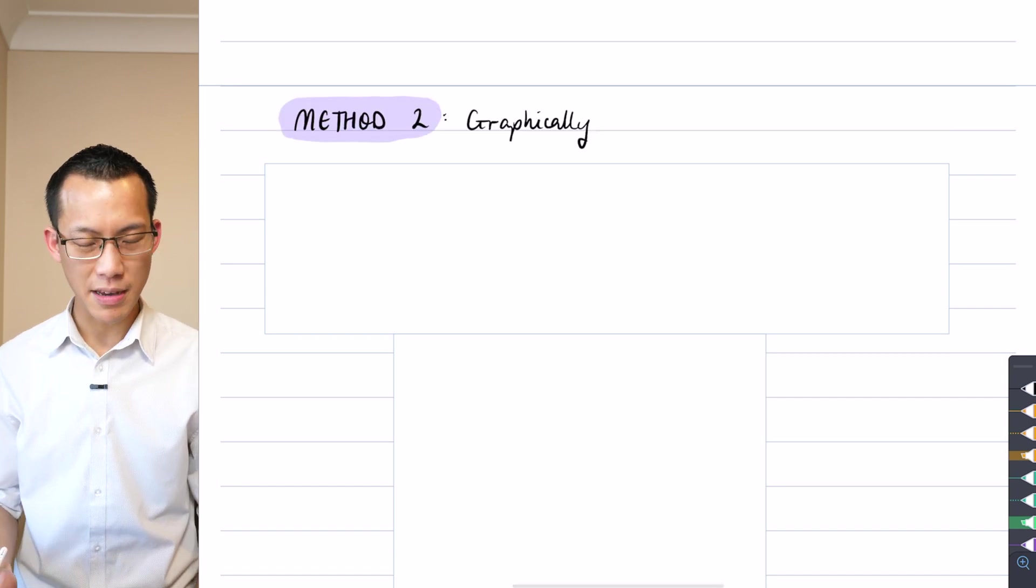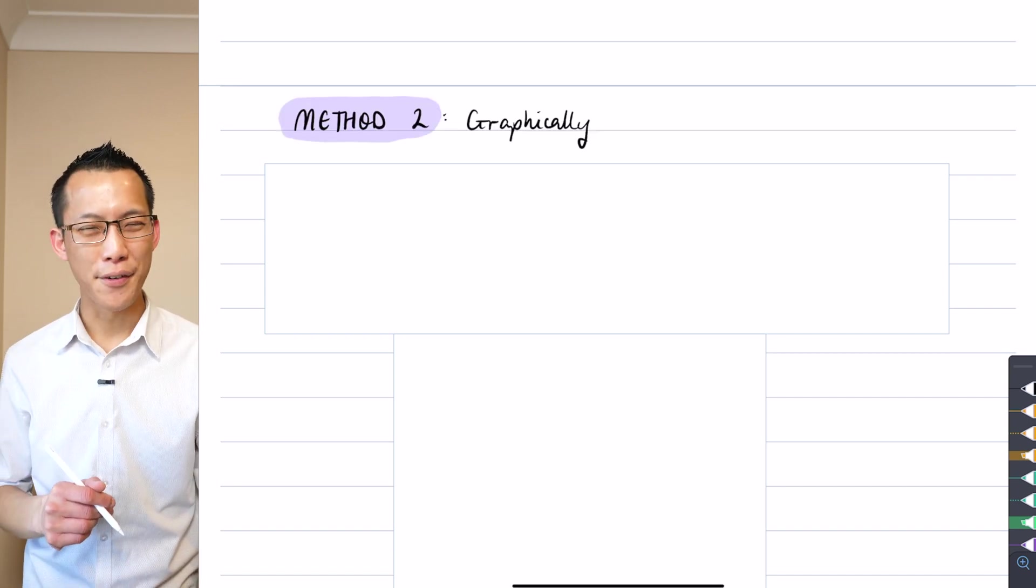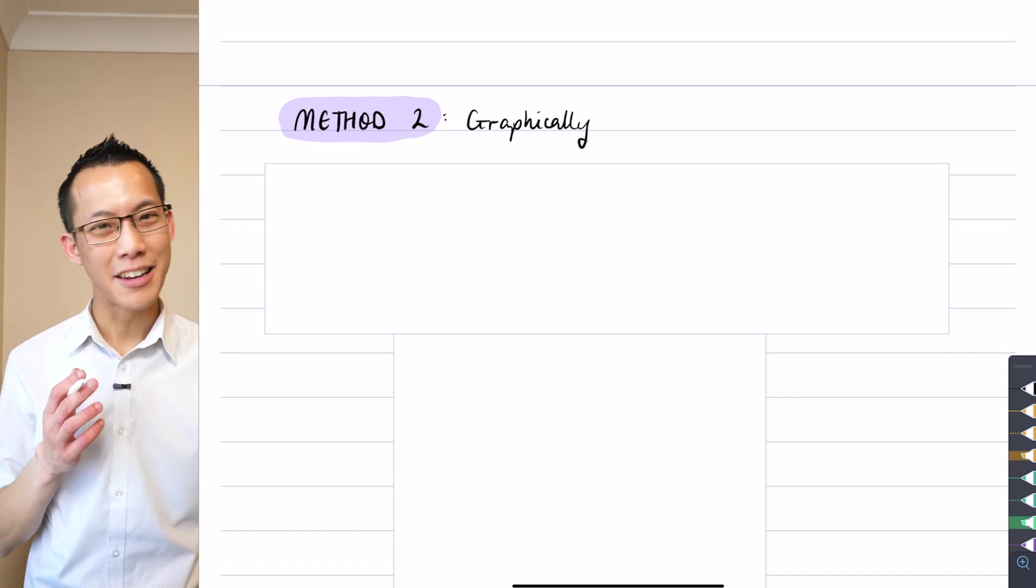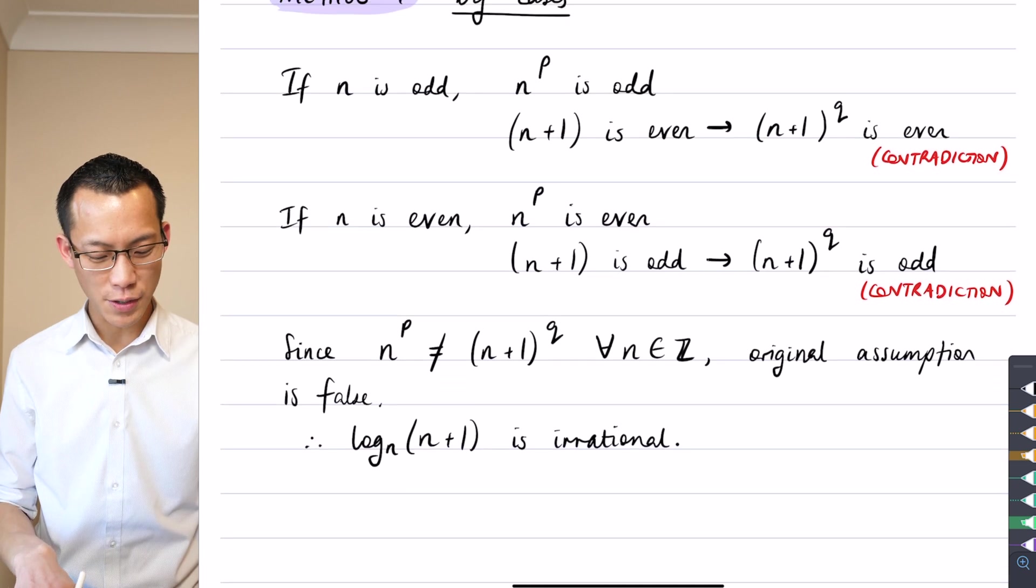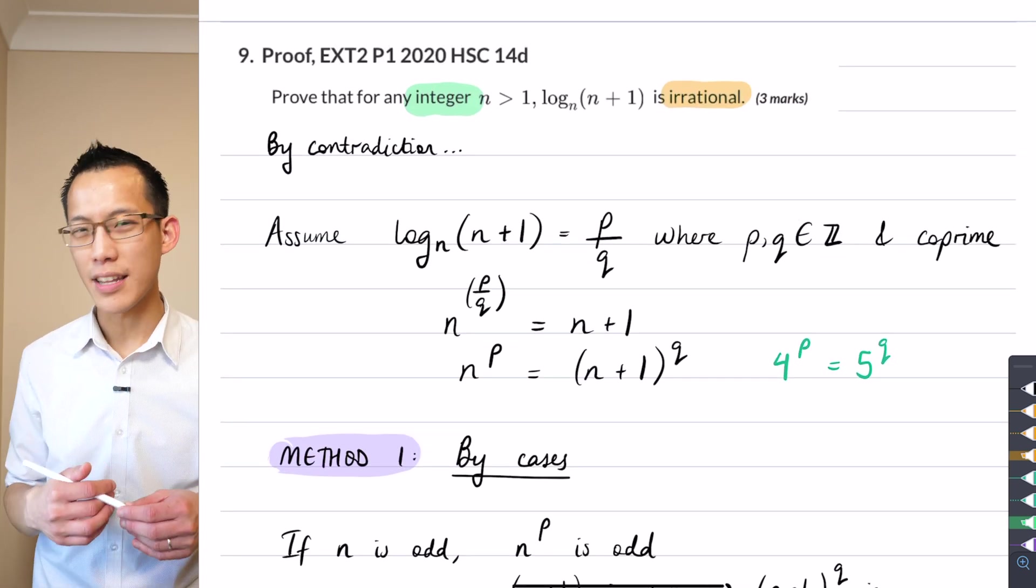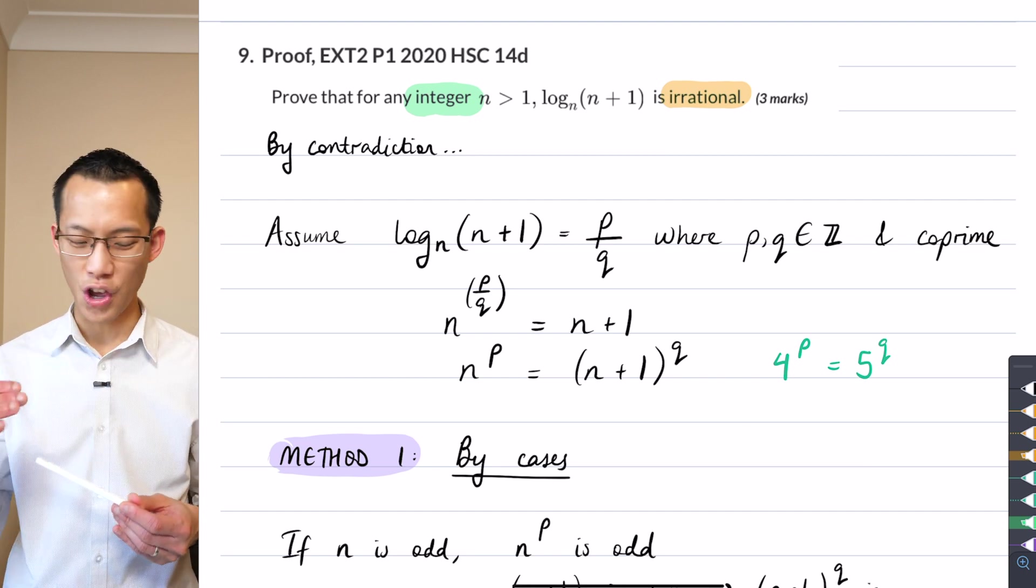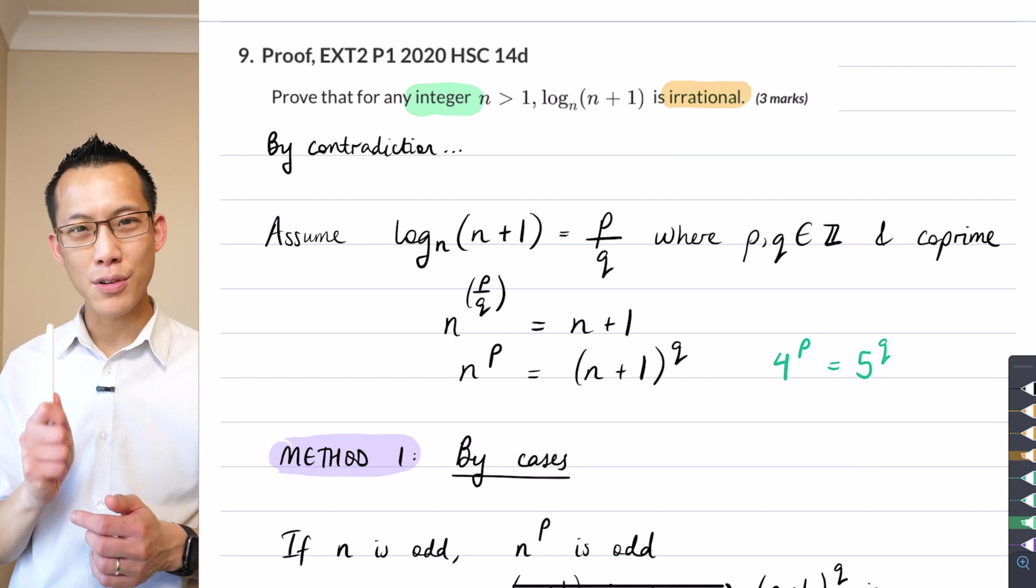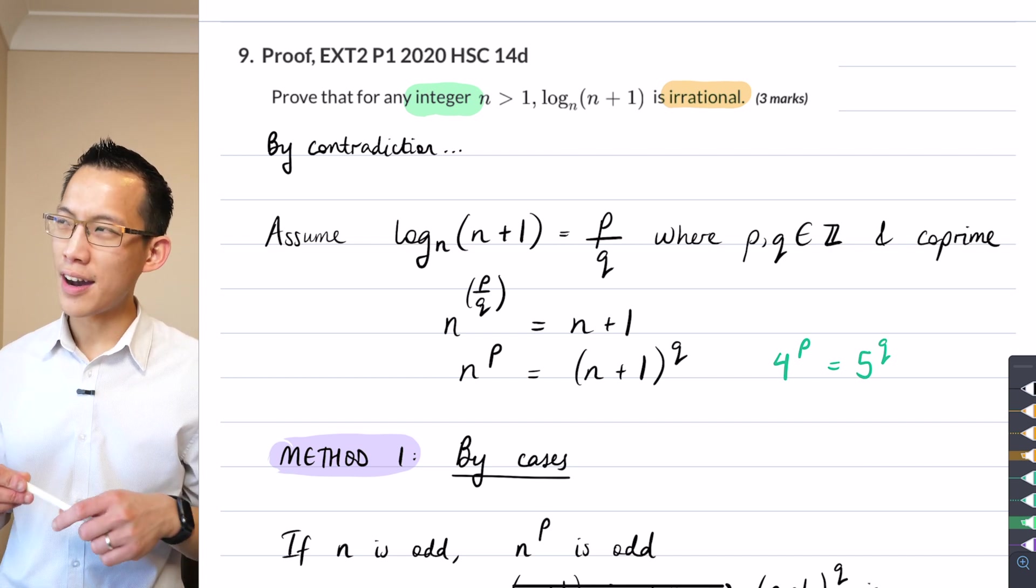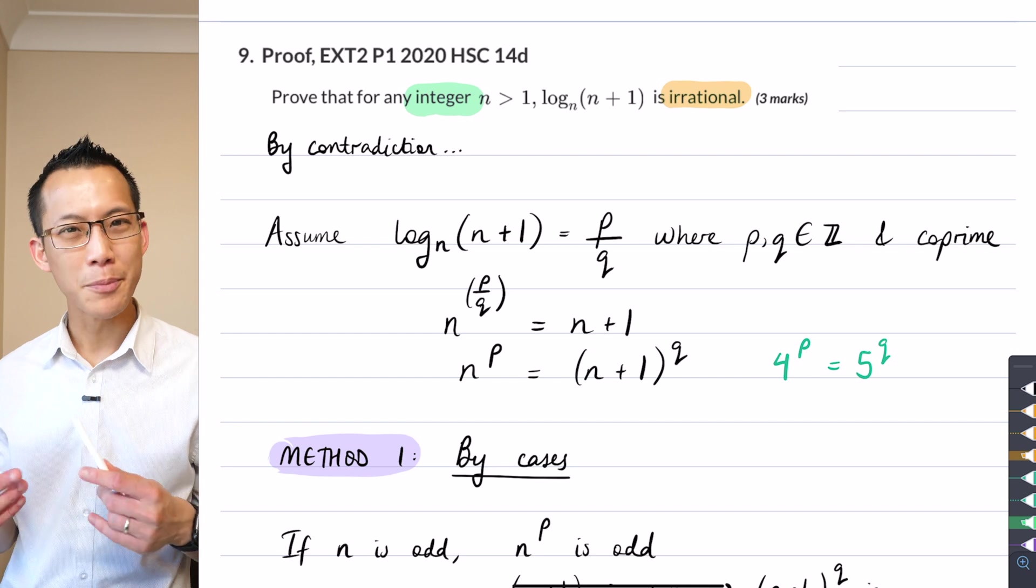So this second method is to employ all the stuff that we know from graphing, which we've done a lot of in advance and extension one. And maybe it's not obvious to you at all, especially because this whole question is in integer land, so we don't tend to think about graphing like continuous curves when we're talking about integers. But it doesn't mean you can't use, what's the word I'm looking for? What we're doing is proving something harder, as it were.